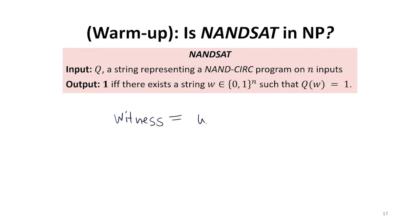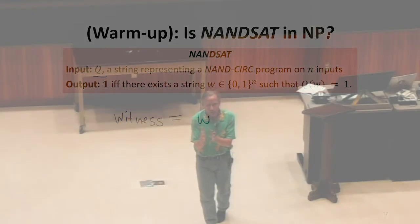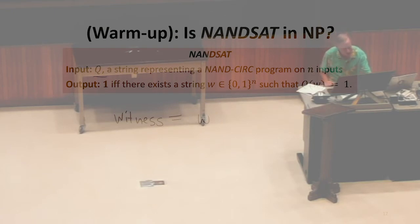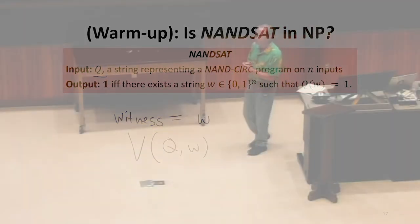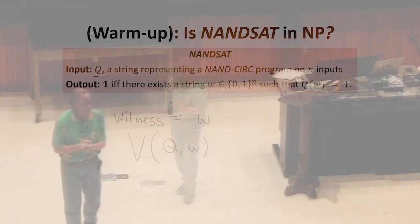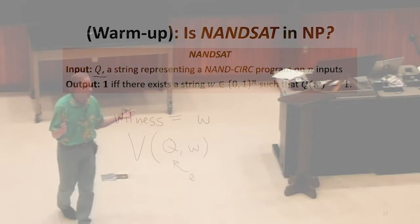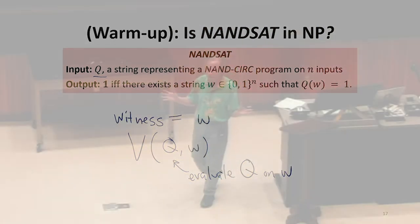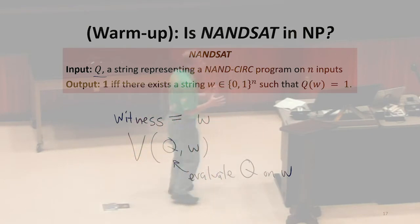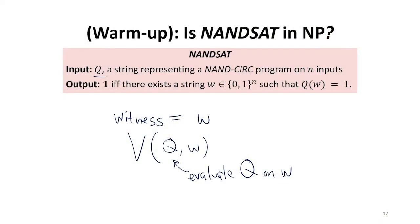Our goal is to have something that, if the output is 1, convinces us the output is 1. For any instance of this problem where q is a circuit and there's some input that makes it true, we can find a witness that proves that — and that's the input. Can we verify this in polynomial time? We need some verification function that takes q and the witness and tells us if it's valid. The verification just evaluates the circuit that q represents. If the output is 1, it's a valid witness; if 0, it's not. So that works as a witness, and it's easy to verify. So NANSAT is within NP.